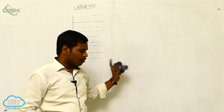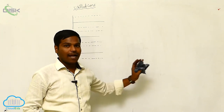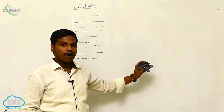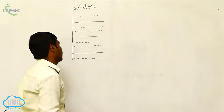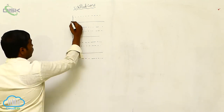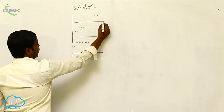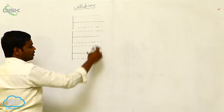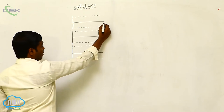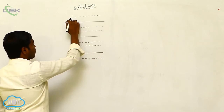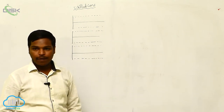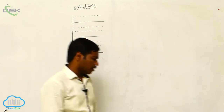The displacement, velocity and acceleration — how are they compared? Here I am drawing time along the x-axis and displacement along the y-axis.